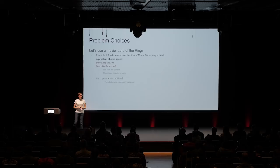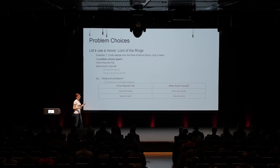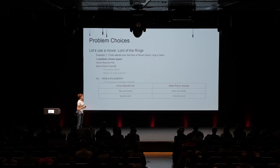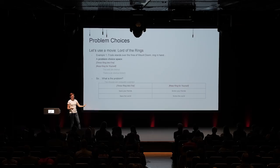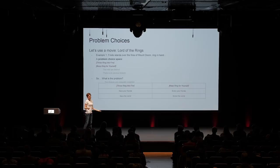This makes a choice like this really unequally weighted. If we throw the ring into the fire, we save our friends and the world. Keep the ring for ourselves, we cause real problems and probably become Gollum. It's a calculation, not a compelling choice — if I'm playing good, it's already decided. So how would we fix this? Scramble the pros and cons. Maybe saving the world screws over all the characters I've made friends with, or maybe I can save my friends but the entire world will burn. That kind of plays different player motivations against each other in a way that creates a much more compelling choice.